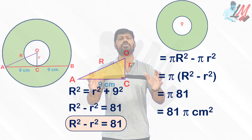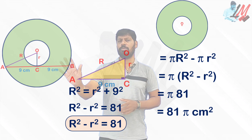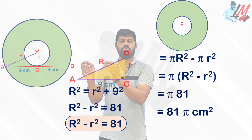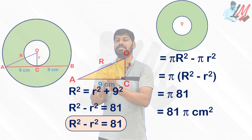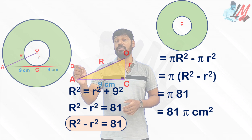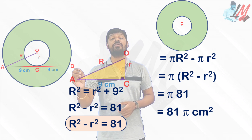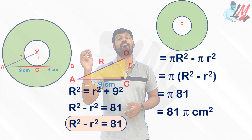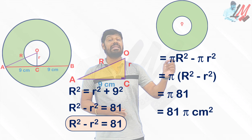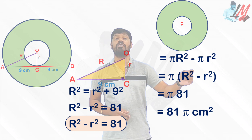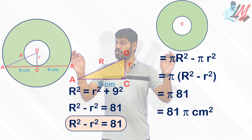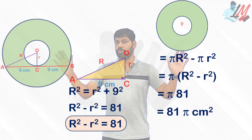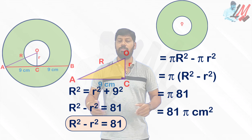So surprisingly and elegantly the problem was built, and the solution is equally elegant. Simply, without any information about the radii of both circles, we could calculate the area of the ring — that is the beauty of this problem. Hope you enjoyed this.